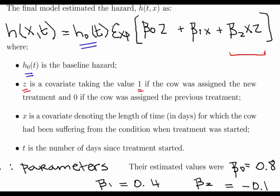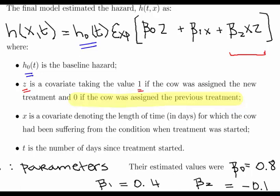The baseline case is that the cow is assigned to the previous treatment. X is a covariate denoting the time in days for which the cow has been suffering from the condition when the treatment was started. So it's essentially how long were you waiting to start the treatment after you realized the cow was suffering — how long has the cow been suffering until you started the treatment.